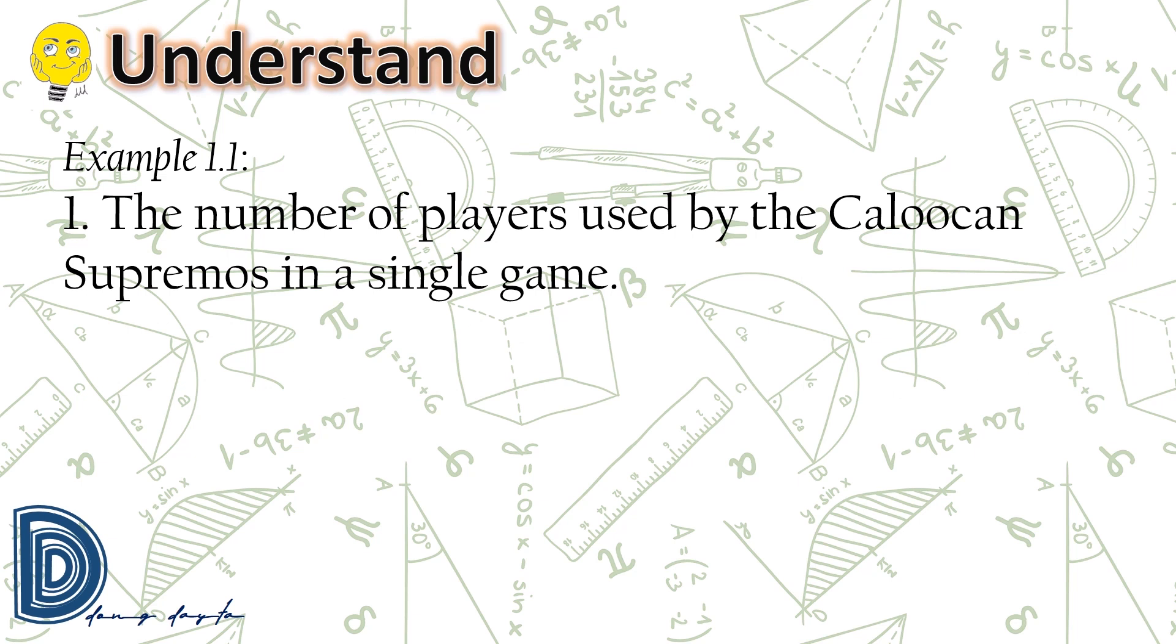Here are the examples for discrete random variables. The number of players used by the Caloocan Supremos in a single game. Let us have some more examples.